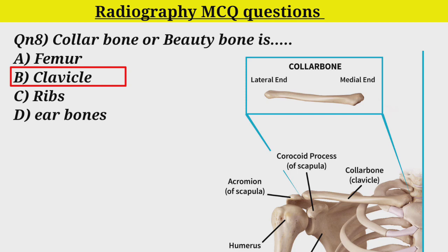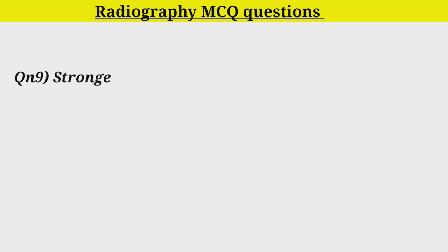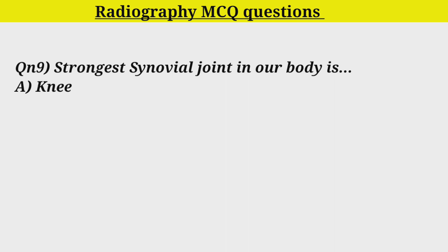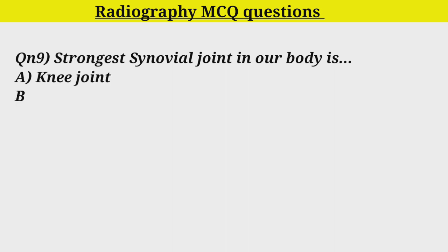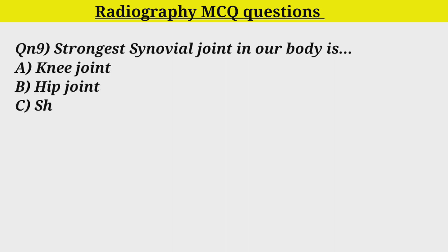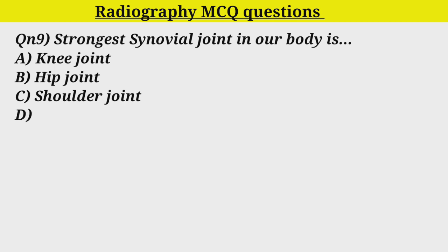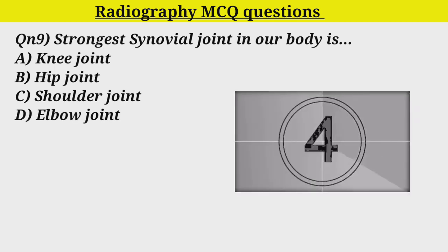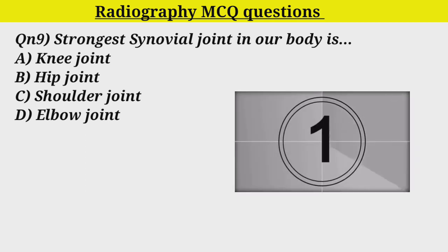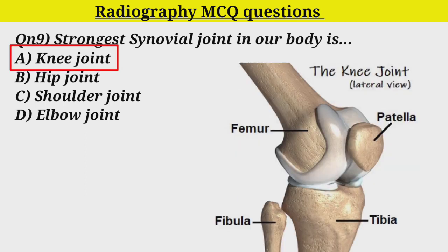Q9. The strongest synovial joint in our body is: Option A. Knee joint. Option B. Shoulder joint. Option C. Shoulder joint. Option D. Ear bones. Correct answer is Option A. Knee joint.